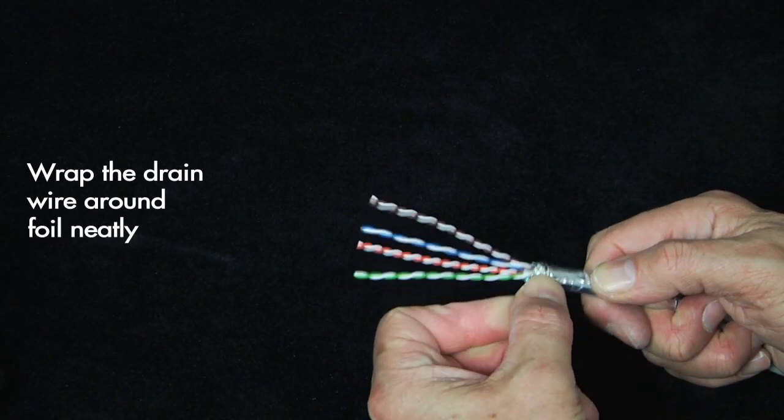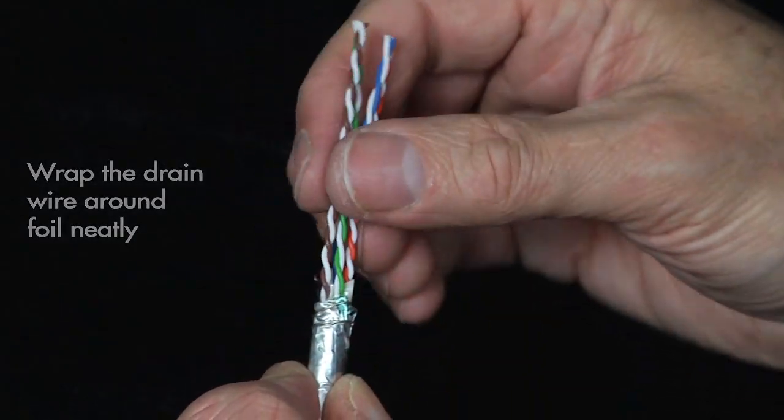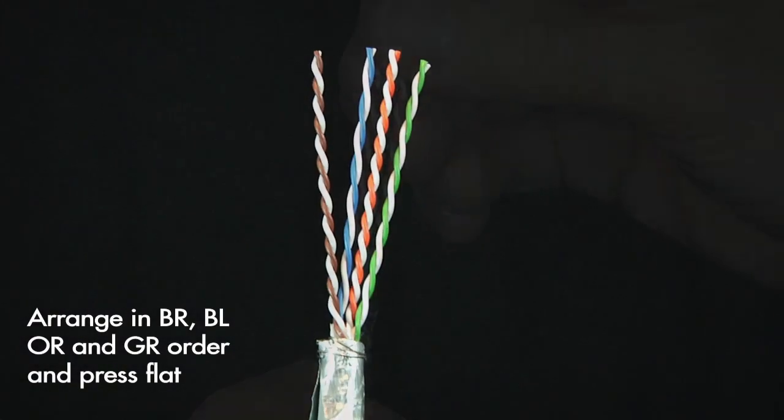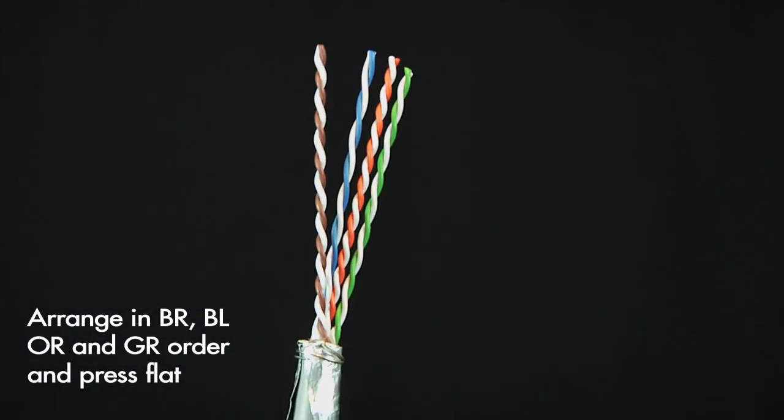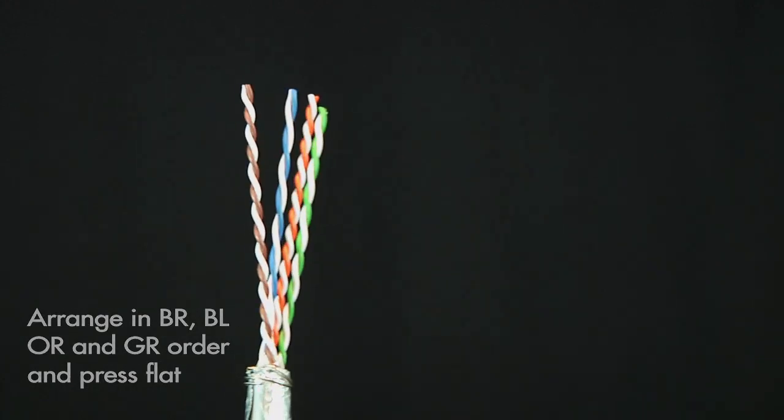Wrap the drain wire around the foil neatly, trying not to overlap. Now, arrange the pairs in brown, blue, orange, and green order and press them into a flat configuration.